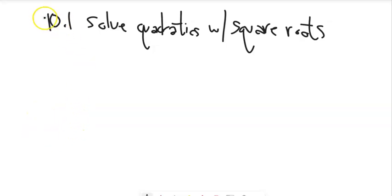This is Math 98. We're looking at section 10.1, and we're going to start solving different types of quadratics. The first thing we're going to start using is the square roots.